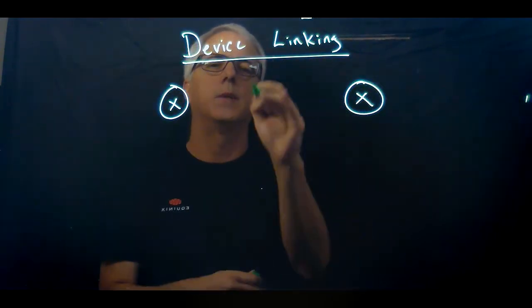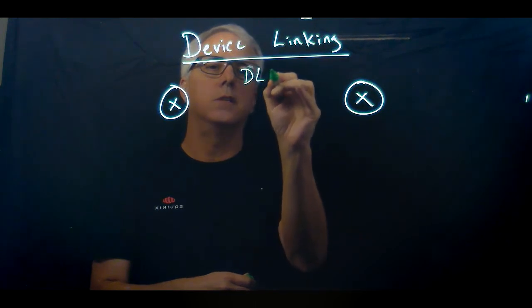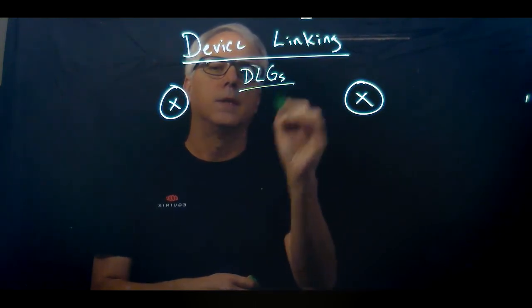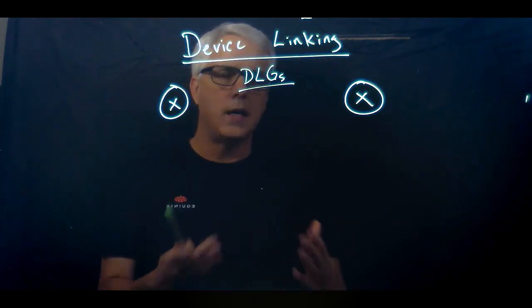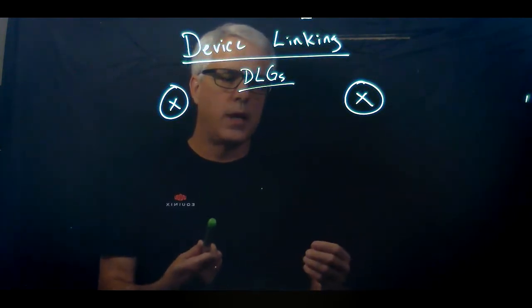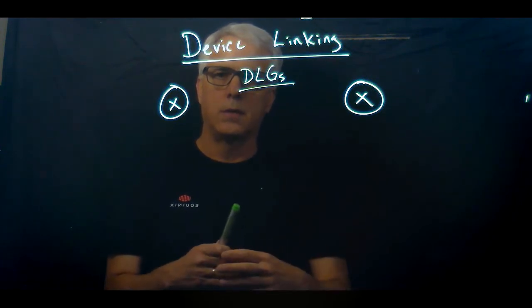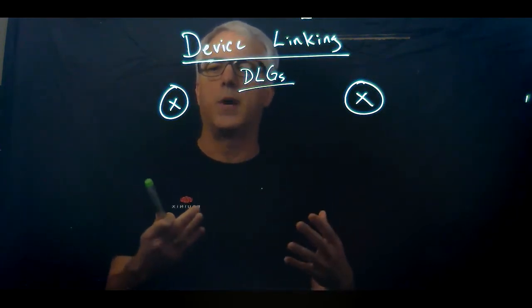Device linking is an overall concept and then you create DLGs or device link groups. Device link groups are applied at the interface level, not at the device level. Because it's applied at the interface level, it allows you to build very flexible topologies.